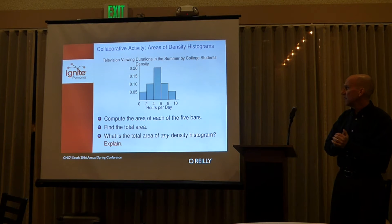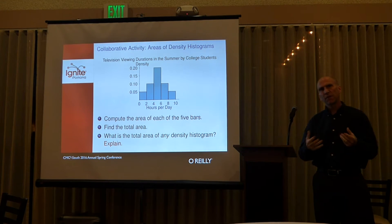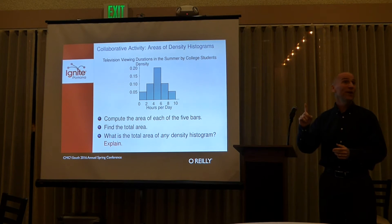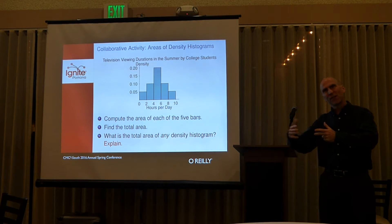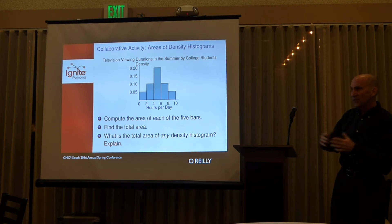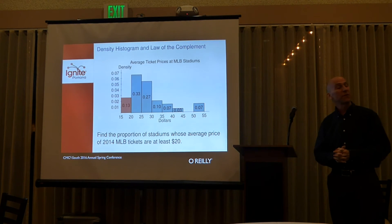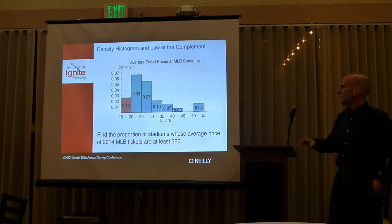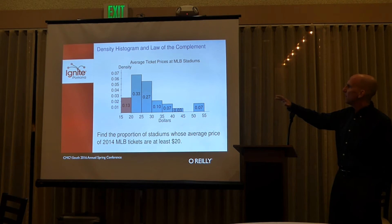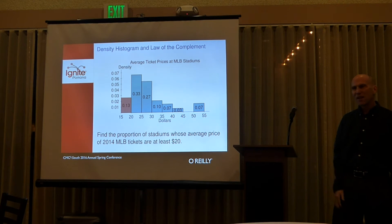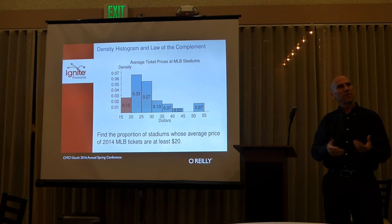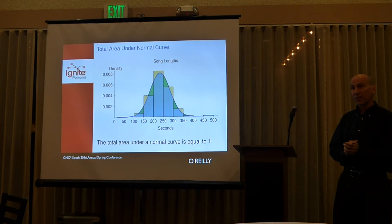Here we have a collaborative activity where students can discover that the total area of these bars equals one, obviously leading toward the normal curve. They can then generalize that this would happen with any density histogram — there's a lot of muscle behind that. The next point is to take a density histogram and rather than find the area of the blue bars, which would take a bit of work, instead do one minus the area of the red bars. This sets the students up for the law of the complement — another advantage of density histograms.